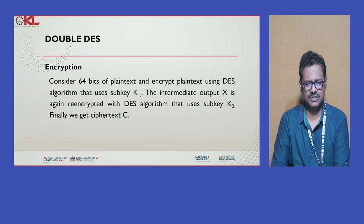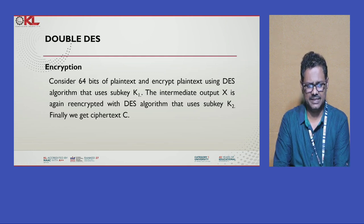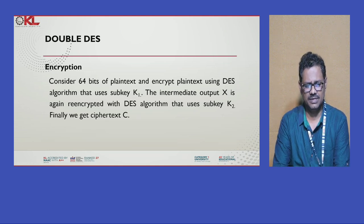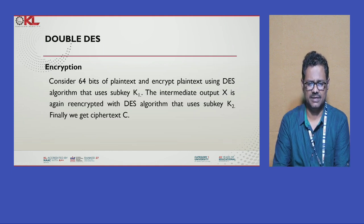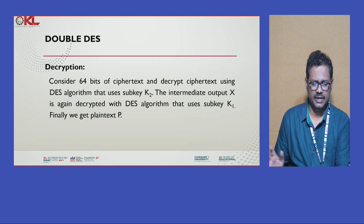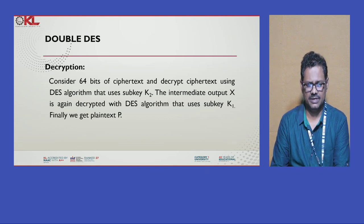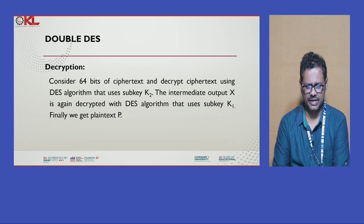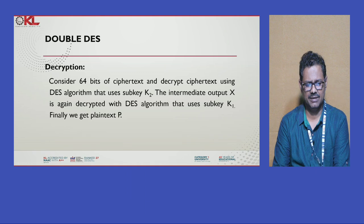We take 64 bits of plain text and encrypt it using the DES algorithm with sub-key K1, getting intermediate product X. That is then encrypted with sub-key K2, finally getting cipher text C. For decryption, we apply in reverse: first K2 on the cipher text to get intermediate output X, then K1 to finally get plain text P.